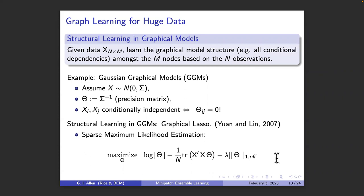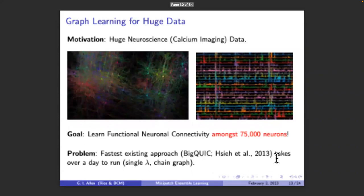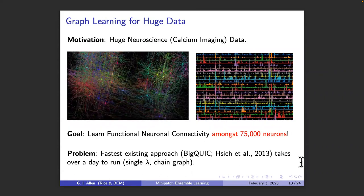This is a super well-studied problem with tens of thousands of papers. But computationally it's still really hard — exactly what we're trying to tackle. I've been collaborating with neuroscientists on absolutely huge data: trying to learn functional connectivity and the network among 75,000 neurons in the visual cortex of a mouse brain. We tried the fastest existing approach, BigQuick — a quasi-Newton method — and running it on 75,000 nodes for a chain graph with a single value of lambda took over 24 hours. This is not going to work for neuroscience-scale data.